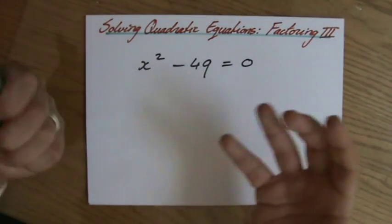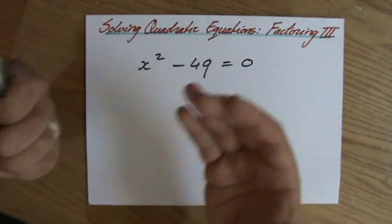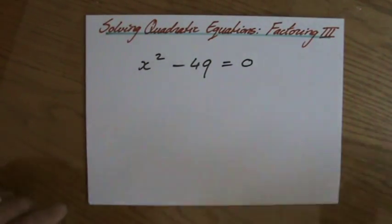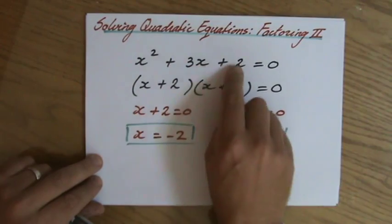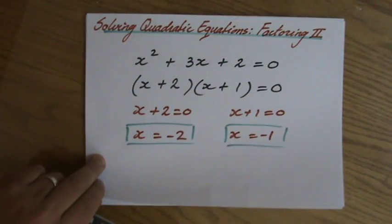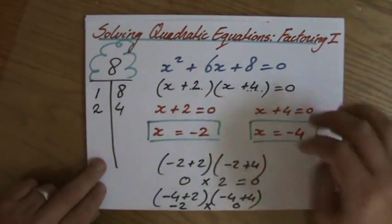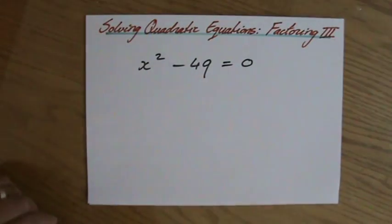I don't have that term with x in the middle. Because so far, my equations had three terms all the time. Like the previous video, x squared plus 3x plus 2, or even the one before, I had x squared plus 6x plus 8. But now I only have x squared minus 49.